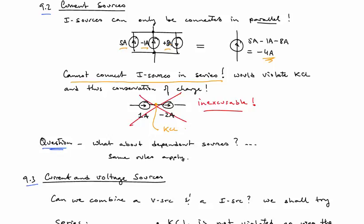All right, the node, the current entering that node is not equal to the current leaving. So KCL is violated, just like KVL was violated when we put two voltage sources in parallel.